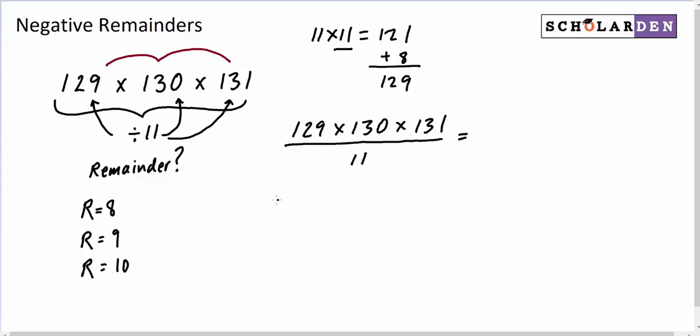That means 129 times 130 times 131, divided by 11, is going to equal—129 is 11 times 11 plus that remainder of 8; 130 is 11 times 11 plus 9; and 131 is 11 times 11 plus 10—all divided by 11.